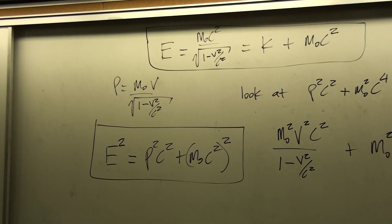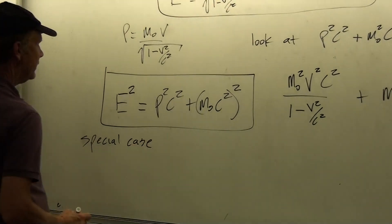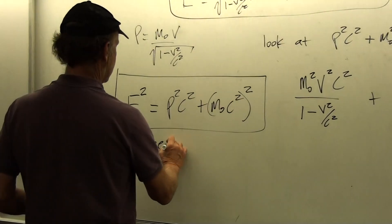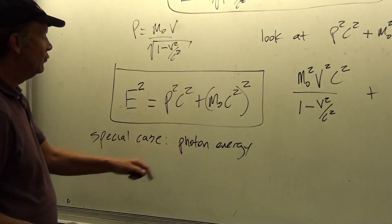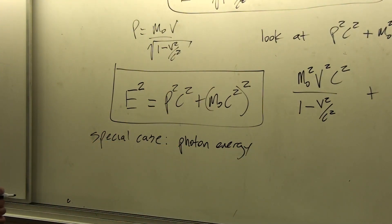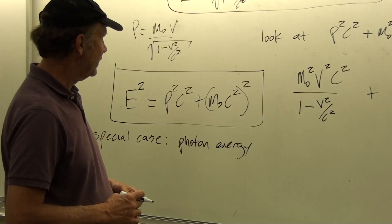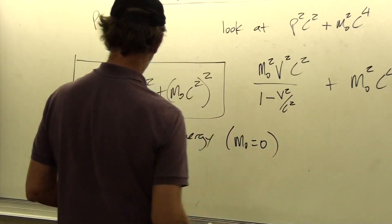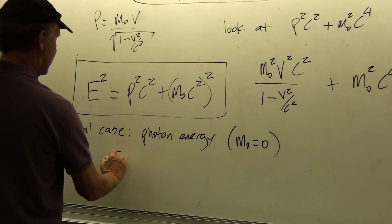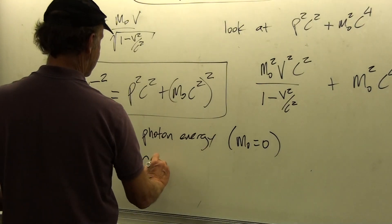There is an interesting special case which we'll look at in more detail in chapter 38 — the photon. A photon, which is a particle of the electromagnetic force and can also be thought of as an electromagnetic wave, has zero rest mass. So m-naught is equal to zero. Remember it always travels at the speed of light. For a photon, our Einstein triangle relationship still works but with one of the sides of the triangle equal to zero, so E equals pc.